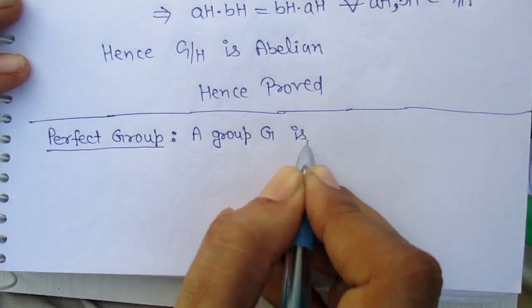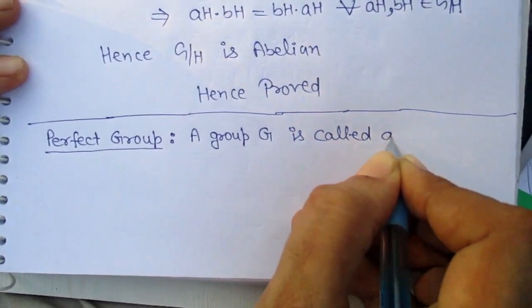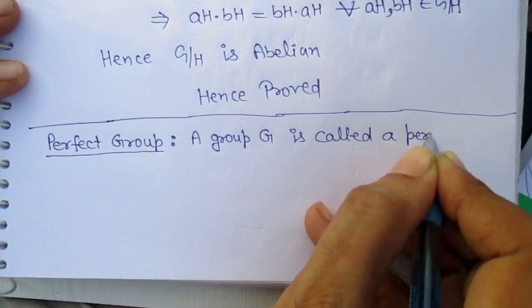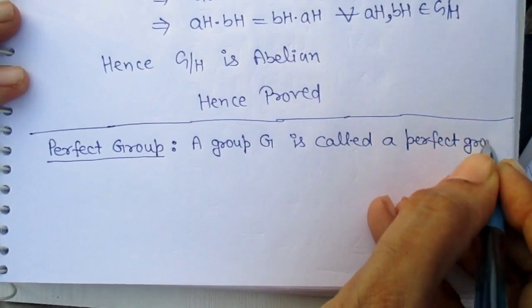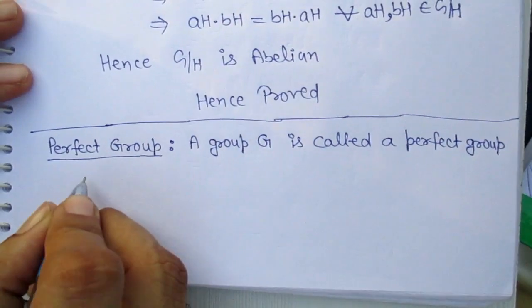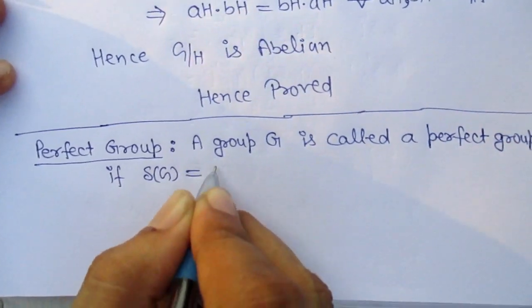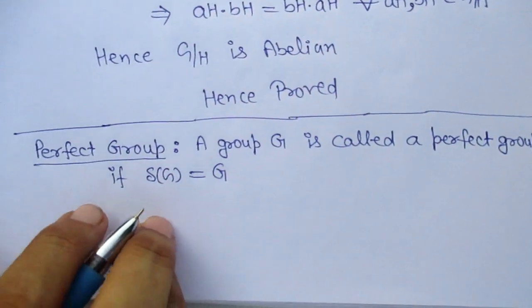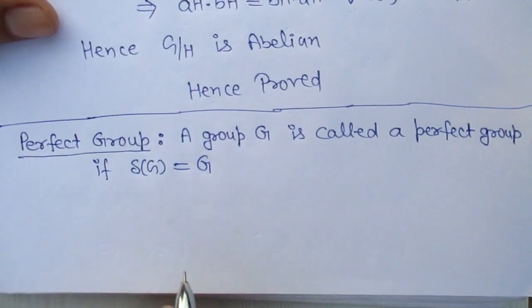G is called a perfect group if delta G is equal to G. If delta G equals G, then in that case we call G a perfect group.